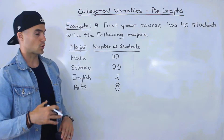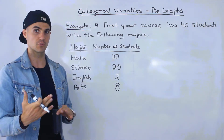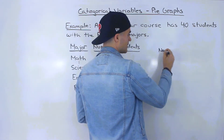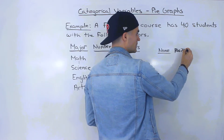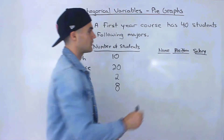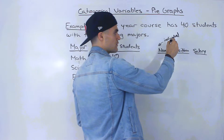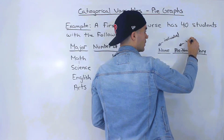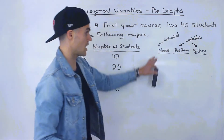Before getting into pie graphs, I want to do a quick review of the last video where we differentiated between individuals and variables and relate it to this example. In that previous video we went over an example with a table listing each employee's name, their position at a company, and their salary. Each employee was the individual being analyzed, and position and salary were the variables — the characteristics of those individuals.